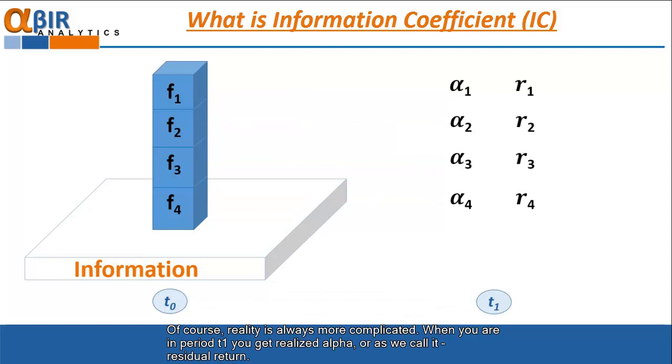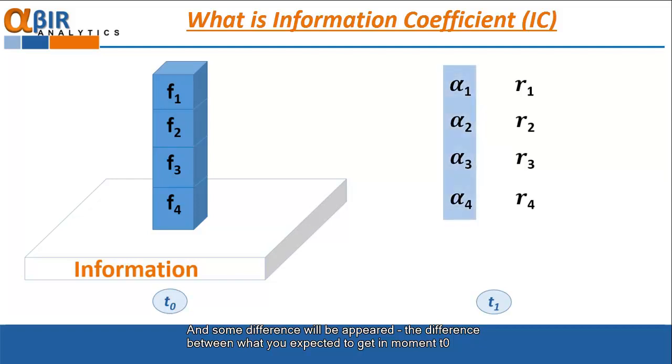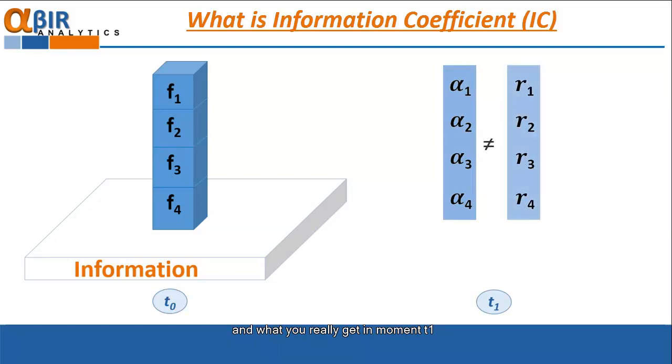Of course, reality is always more complicated. When you are in period T1, you get realized alpha or as we call zero return. And some difference will be appeared. The difference between what you expected to get in moment T0 here and what you really get in moment T1 here.